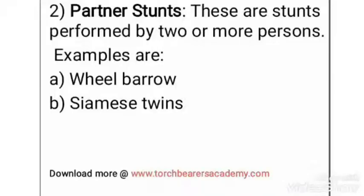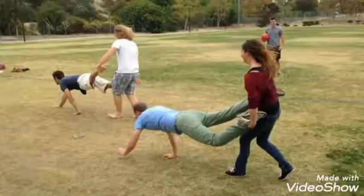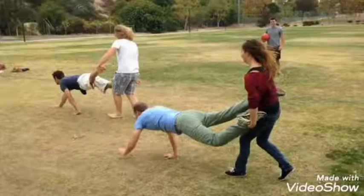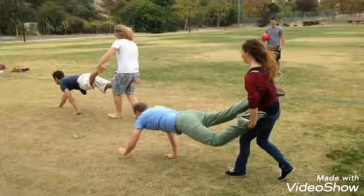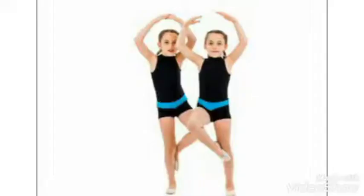Partner stunts are stunts performed by two or more persons. Some examples of partner stunts and how they are performed: one, wheelbarrow — this is a partner stunt done by two persons where one person puts his hands on the floor facing downwards while his partner holds his feet, then they try to move in this position.